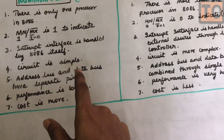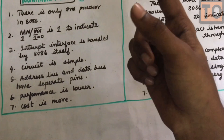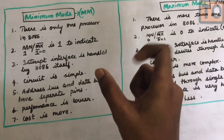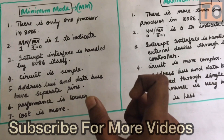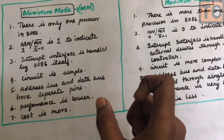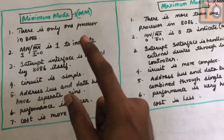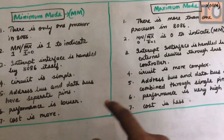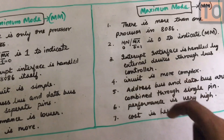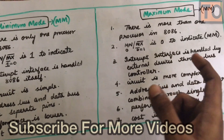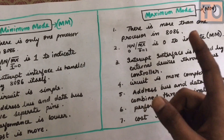The address bus and data bus have separate pins in the minimum mode of the 8086. In maximum mode, the address bus and data bus are multiplexed and share a single pin.